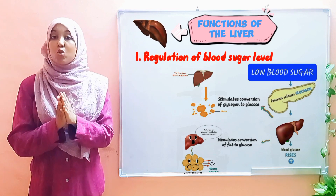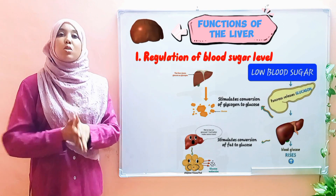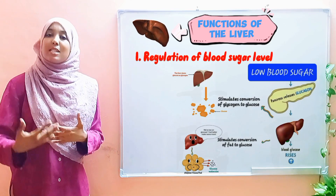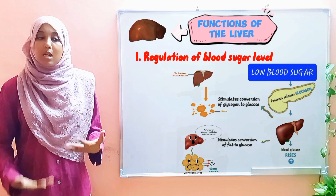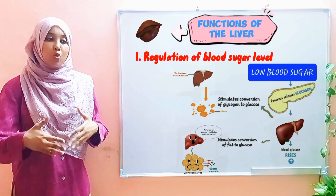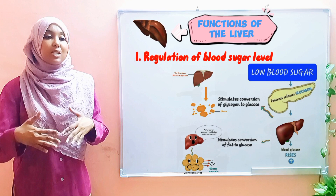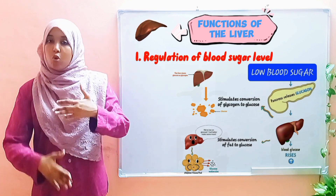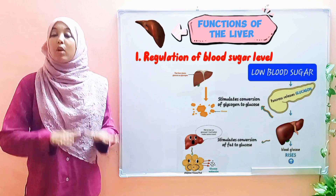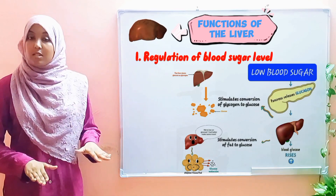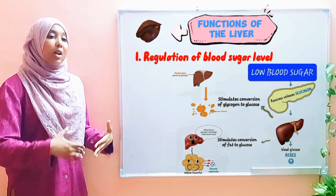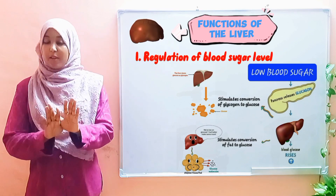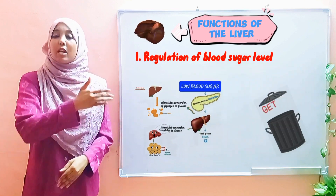Another thing about glucagon is that it also decreases the amount of glucose that is being oxidized. Regarding the breakdown of glucose by the liver cells, glucagon ensures that oxidation of glucose is decreased — less glucose is broken down by the liver cells — in order to ensure there is more of it in the bloodstream.